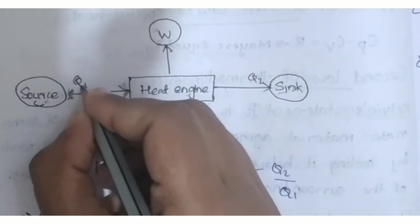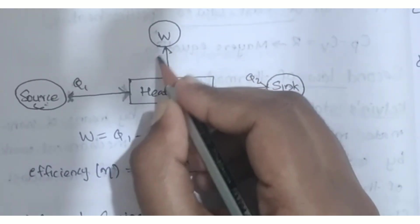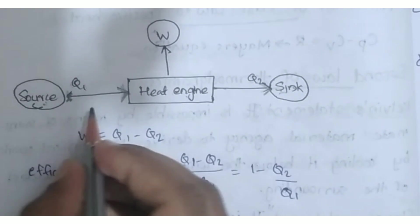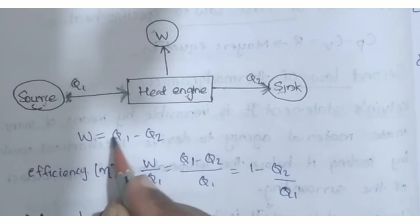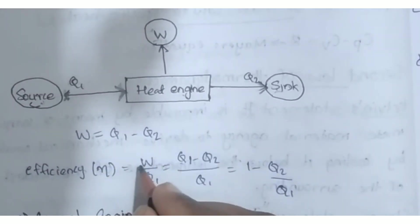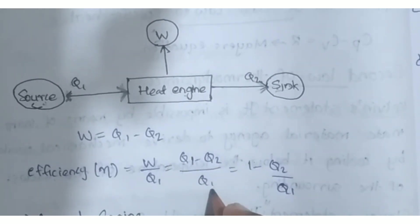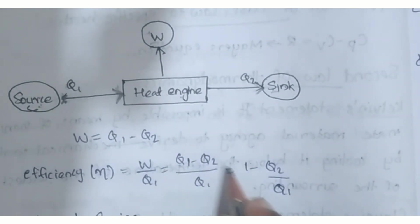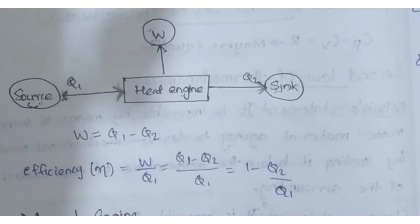The source supplies Q1 amount of heat. The sink receives Q2 amount of heat. The work done is Q1 minus Q2. The efficiency is Q1 minus Q2 divided by Q1, which equals 1 minus Q2 divided by Q1.